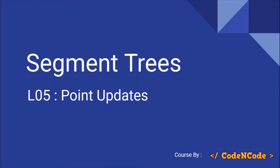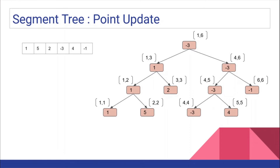Hello guys, this is Code and Code, and this is the fifth lecture in this segment tree series. In this lecture we are going to study about point updates. A point update is when you are given an array and asked to perform queries like find minimum, find maximum, or some other operation, and the array may change — there may be a query to change an element at a certain index X.